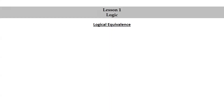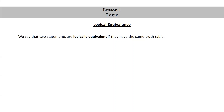Logical equivalence. We say that two statements are logically equivalent if they have the same truth table. We use the symbol with three horizontal lines to indicate logical equivalence.